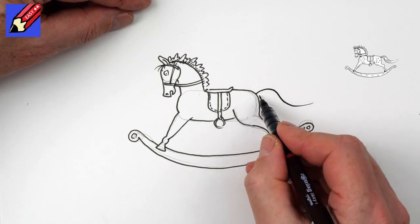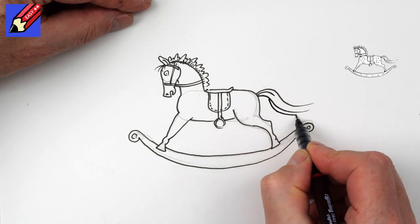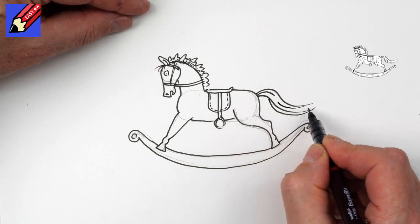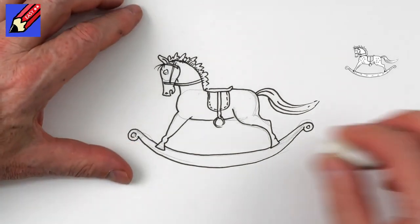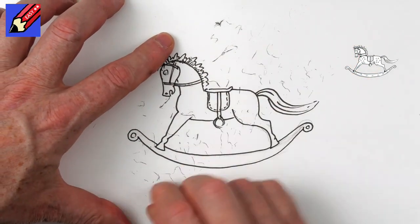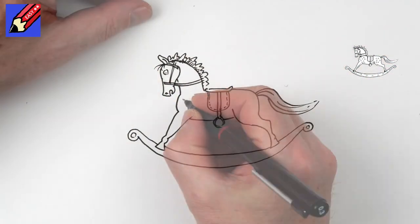And then we're going to want to have the tail, something like that, going off there. When you are absolutely sure that the ink is dry, then you can erase all those pencil lines.